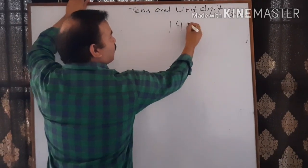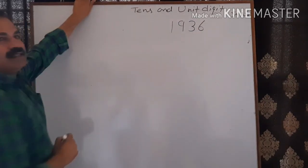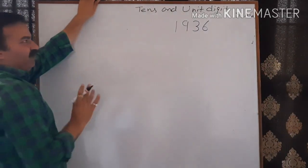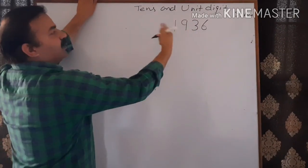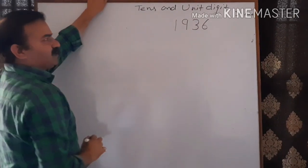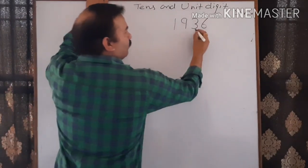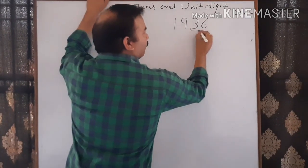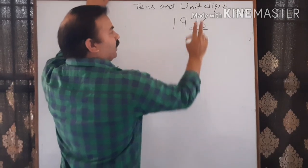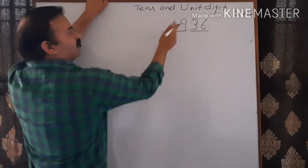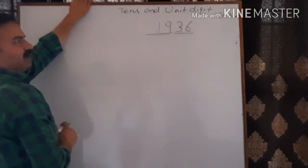Now I'll take one example. The number is 1936 — this is a perfect square number. We have to find the square root of this number. The main thing is: from the right side, make a pair of two digits only. The remaining digits on the left also form another pair.